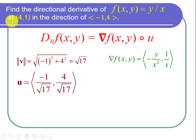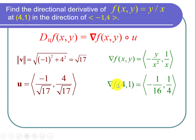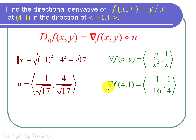We want to evaluate at the point 4 comma 1, so let's plug in x equals 4 and y equals 1. With y equals 1 and x equals 4, the first component is negative 1 over 4 squared, or negative 1 over 16. For the second coordinate, 1 over x with x equal to 4 is 1 over 4. So the gradient of f at the point 4 comma 1 equals the vector negative 1 over 16 comma 1 over 4.